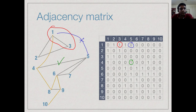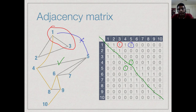Remember that this is undirected. So if there is an edge (4,5), there is also an edge (5,4). The matrix will be symmetric across the diagonal — if we see a 1 above the diagonal, we will see a matching 1 below it, because edge (8,9) is the same as edge (9,8) for undirected graphs.